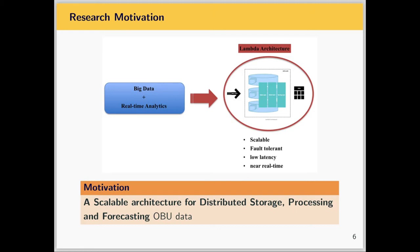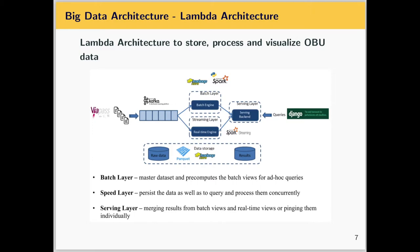The Lambda architecture is made up of three layers: the batch layer, the speed layer, and the serving layer. As you can see from the picture, data flows from left to right — collected from the ViaPass server and injected into both the batch and streaming layers. The batch layer deals more with the big data nature of our OBU data, while the streaming layer handles real-time needs. Both results can be merged or individually visualized in the serving layer where the user has access.